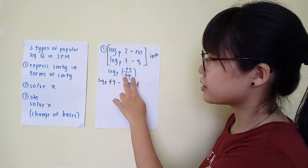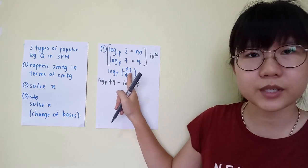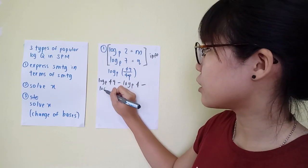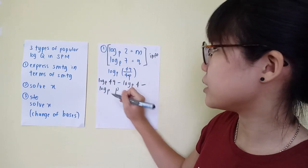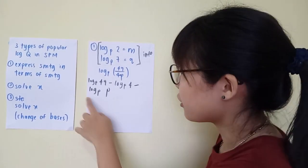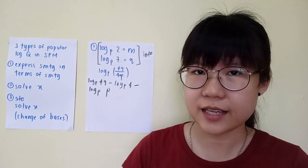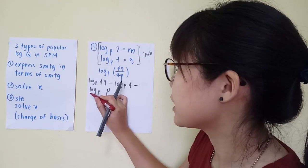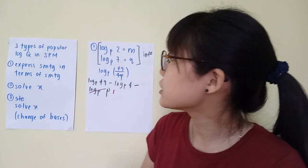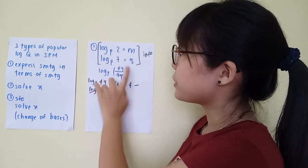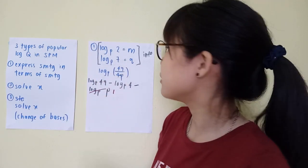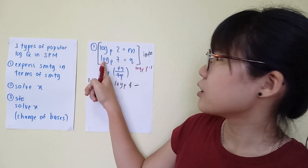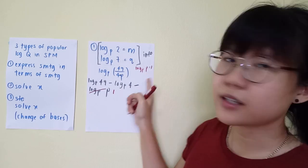Some people write minus log_p(4p) which is wrong — when there's a number and an unknown, make sure to separate them. So it's minus log_p(4) minus log_p(p). Once you see log_p(p) you can cancel it off and make it equal to 1, because that's one of the rules of logarithms. One piece of information you have to add yourself is that log_p(p) equals 1.